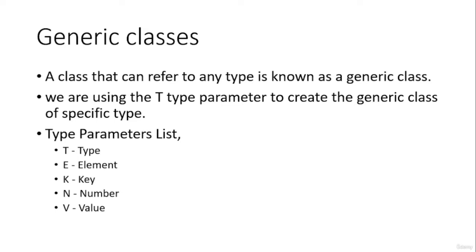We can write a particular generic code for all the classes we want. Let us see the different type parameter list available for generic classes: T for Type, E for Element, K for Key, N for Number, and V for Value. Those are the different type parameter list values provided, and for each one there is a specific meaning we will see in the programs.